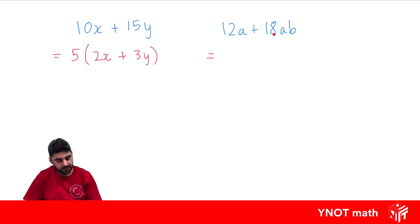In 12 and 18, what's the highest number that goes into both 12 and 18? Well, that would be 6. And because a is in both, a is also a common factor.